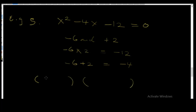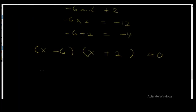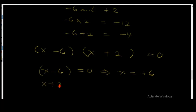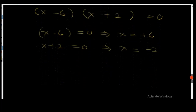Let's bring out the brackets: (x - 6)(x + 2) = 0. So x - 6 = 0, therefore x = +6. And x + 2 = 0, therefore x = -2. Final answer: x = +6 or x = -2. x cannot be both of them, but it must be one of them.